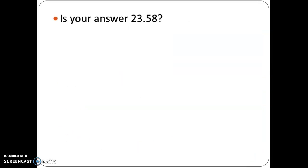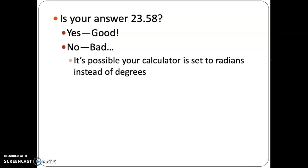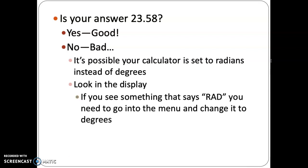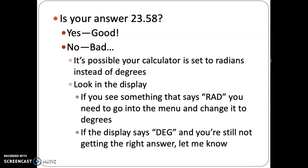So if you did get 23.58, yay, good for you. If you did not get 23.58, it's not necessarily that you did something wrong. It's probably because your calculator is set to radians instead of degrees. Some of you know what I'm talking about. Some of you may not, but look in the display and somewhere in the display, and I want to say it's in the upper right hand part, but I'm not a hundred percent sure. It'll say RAD if it's in radians. And then if that's the case, you'll need to change, go into the menu and change it to degrees, which I don't have the directions for getting into the menu because I don't have a TI-84 handy to look at all the buttons and what to push. So if the display says degrees and you're still not getting the right answer, let me know. And you know, maybe we can figure it out together.